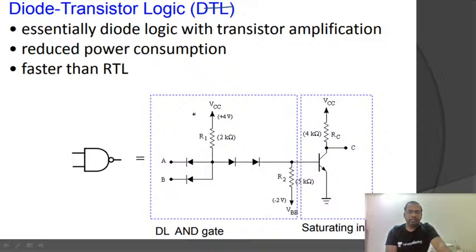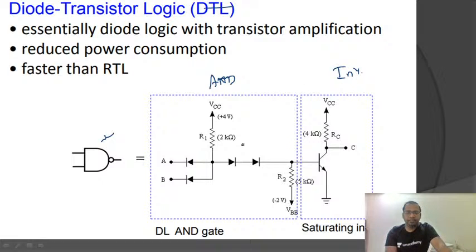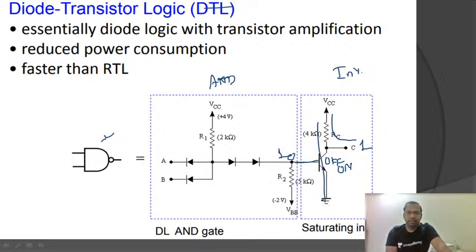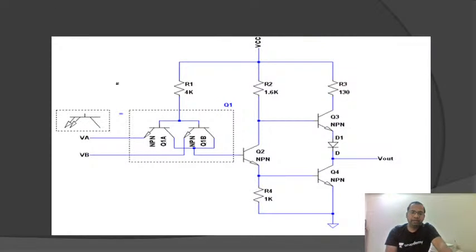Coming to DTL — diode-transistor logic — the NAND gate is implemented as an AND gate followed by an inverter. In the inverter, giving zero keeps the transistor off and output is one; giving one turns the transistor on, VCC short-circuits to ground, and the output is zero.